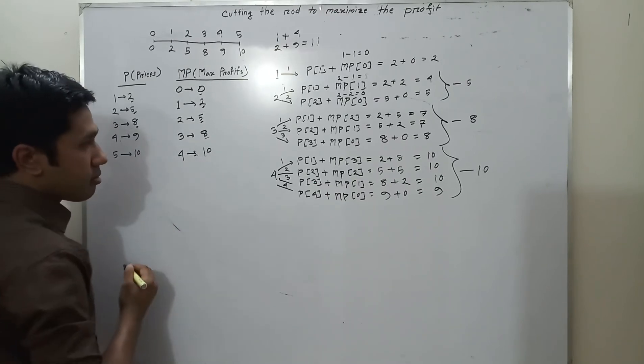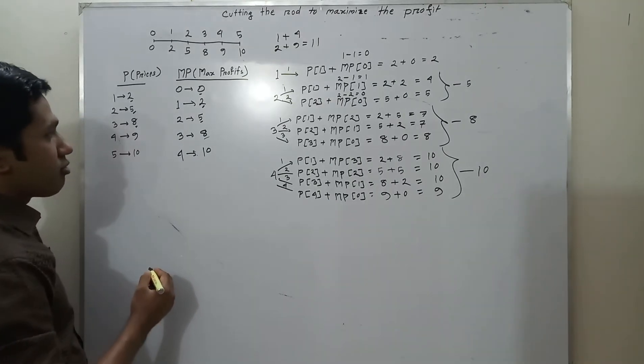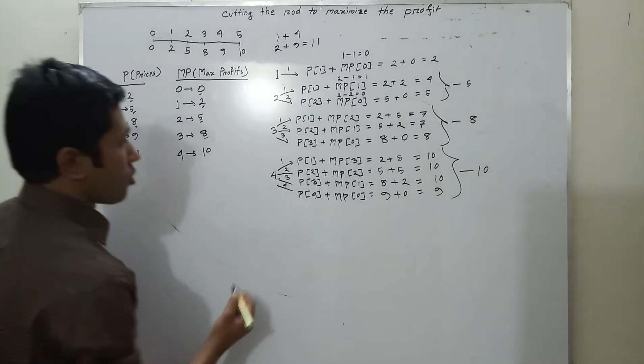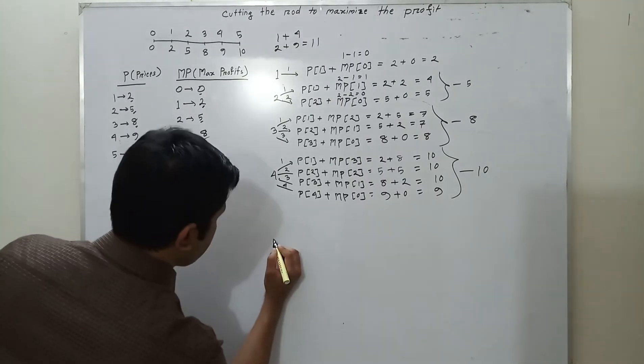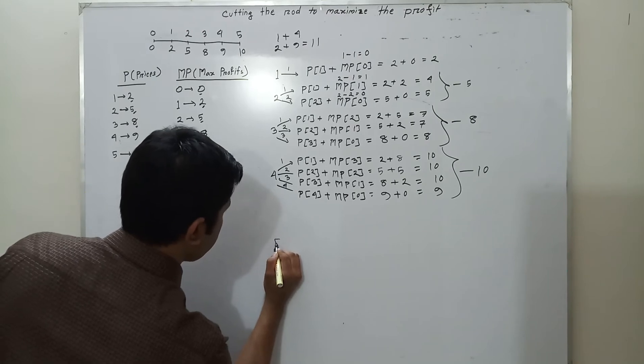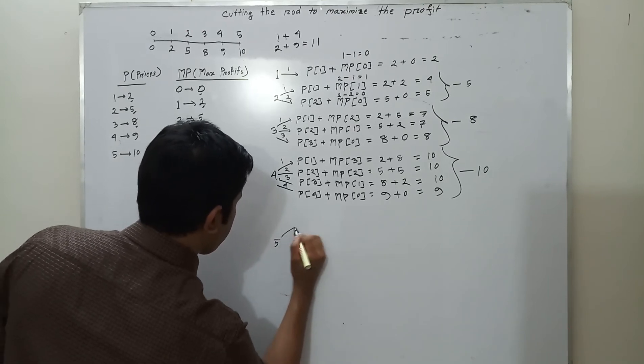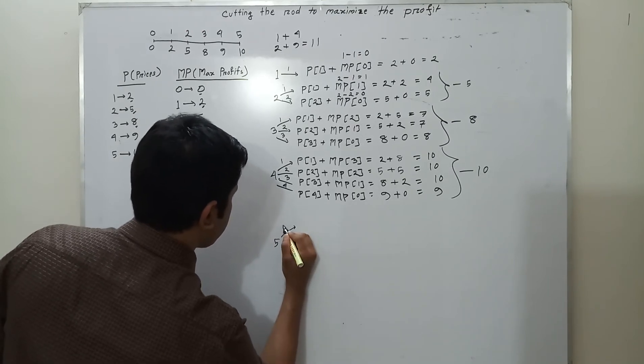Now we will find the max profit for a 5-length rod. For a 5-length rod there are 5 combinations: size 1, 2, 3, 4, or 5.